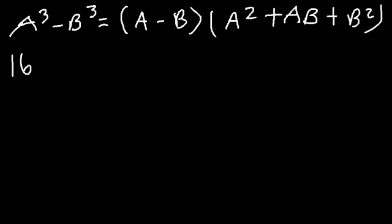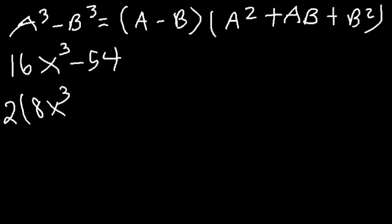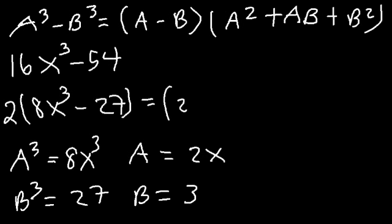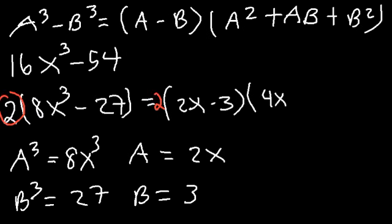Consider 16x³ - 54. We can't take the cube root of 16 or 54 directly, but there's a GCF of 2, giving 2(8x³ - 27). Now 8 and 27 are perfect cubes: the cube root of 8x³ is 2x (so a = 2x) and the cube root of 27 is 3 (so b = 3). Applying the formula: 2(2x - 3)(4x² + 6x + 9).